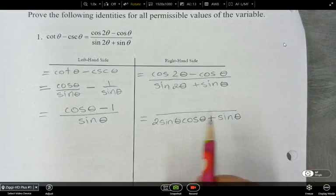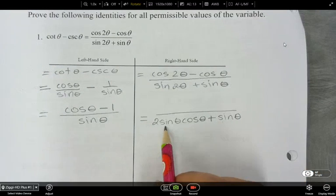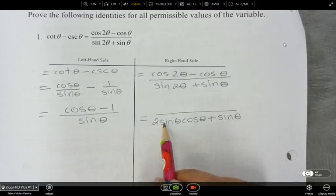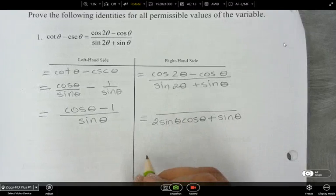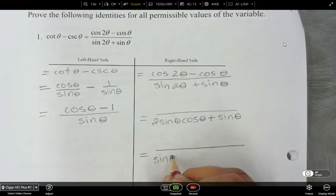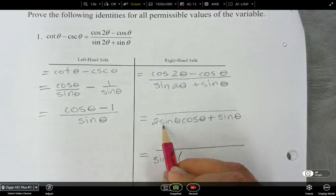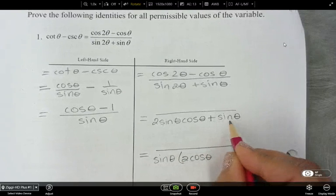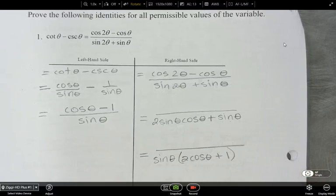Now, what do you notice about this denominator here? You've got a sine in this term and a sine in that term. So what could we do in our next step? You could factor out the sine theta so that you'd have sine theta bracket 2 cos theta plus 1. So if I factor out the sine theta, I'm left with this 2, this cos here, and then plus 1 there.